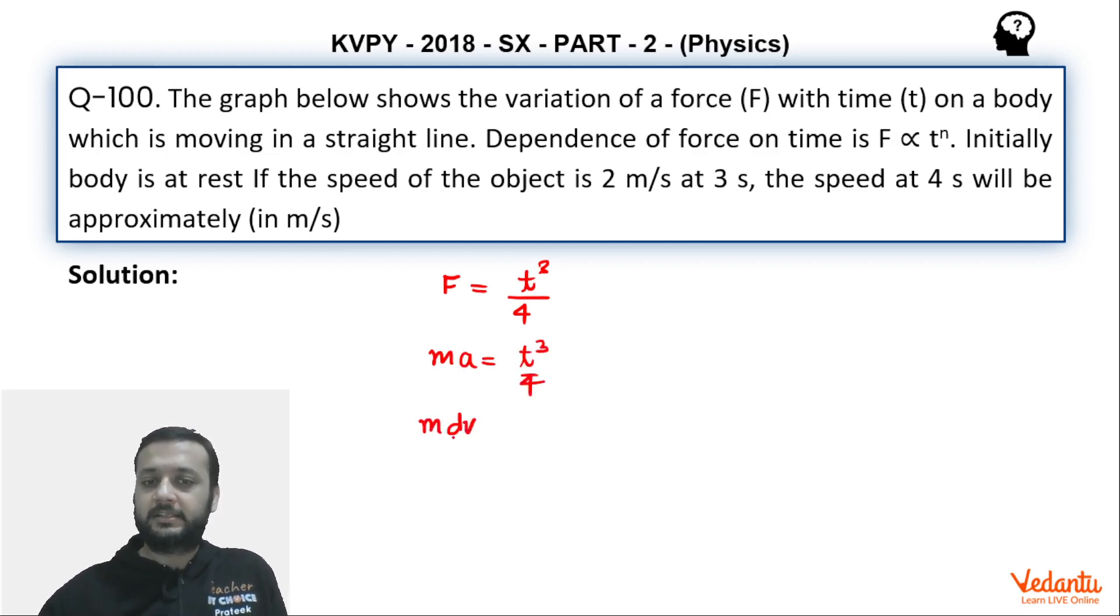Acceleration can be written as dV by dt equals t cubed by 4. And from here, if you see, we can say that m dV equals t cubed by 4 dt. This is what we get. We can integrate this.